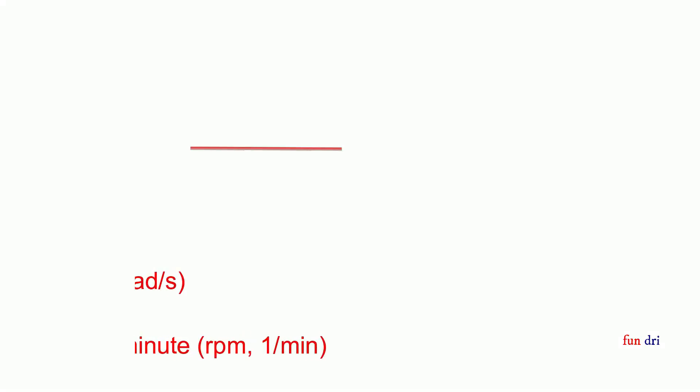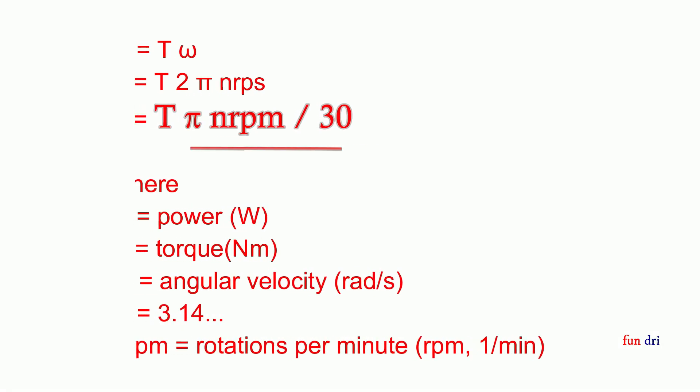The torque is rotating. In a rotation per minute, the power is called by the rotation per minute and the power is called by the power output. The power is called by the initial torque.